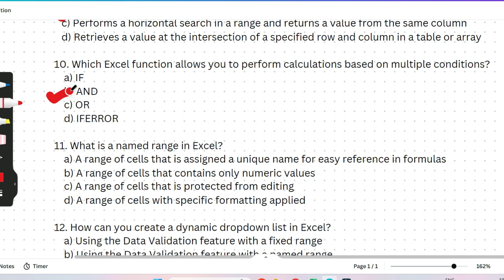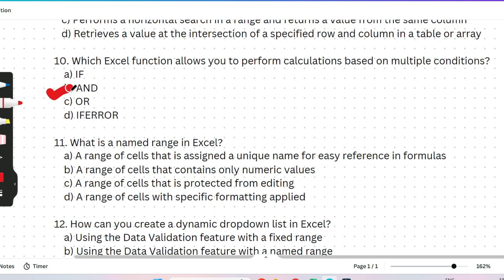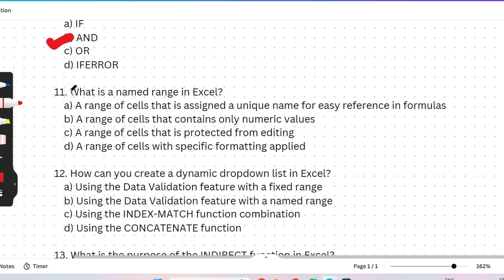The next question: what is a named range in Excel? Options: (A) a range of cells assigned a unique name for reference in formulas, (B) a range of cells that contains only numeric values, (C) a range of cells protected from editing, or (D) a range of cells with specific formatting applied. This is a quiz question for you — please give the answer in the comments. I'll wait for whoever answers first.